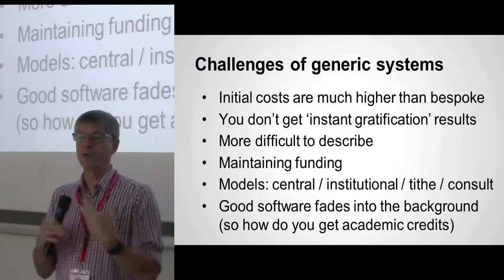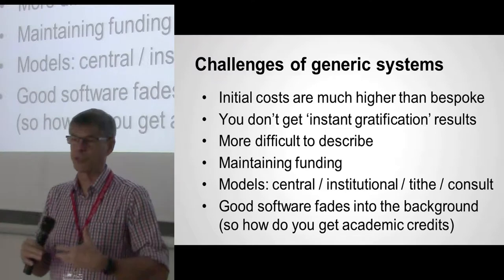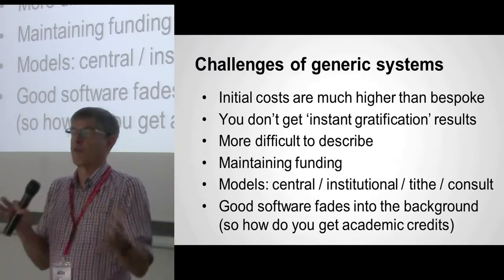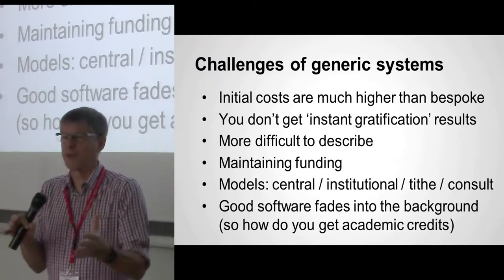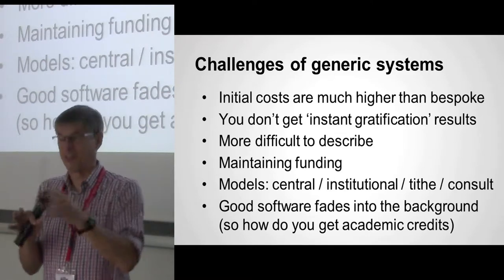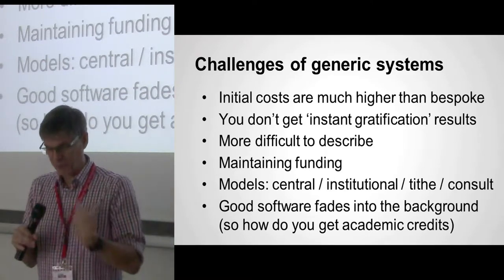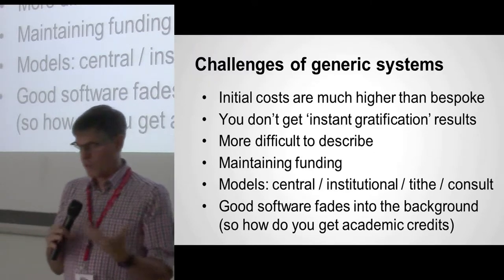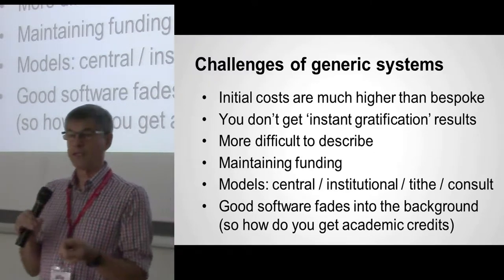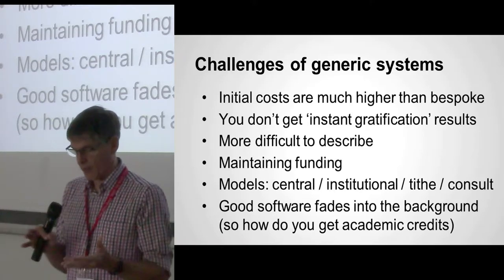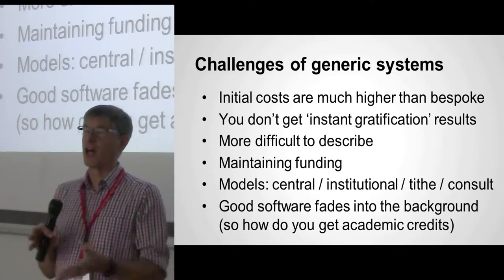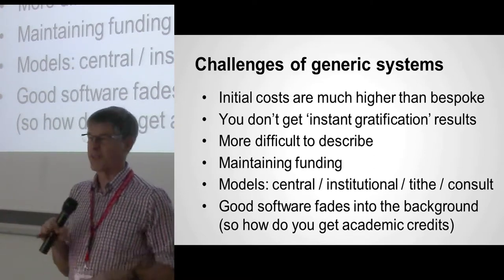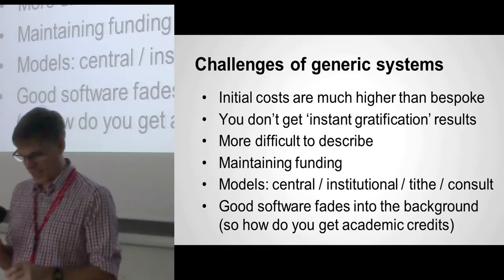Generic systems are more difficult to describe and more difficult to sell to funders. You say, 'We're going to do a generic thing that will solve everybody's problems,' and they ask, 'But which problem are you going to solve?' So you have to look at different models for maintaining funding: central funding where somebody gives you a stack of money; institutional funding where the institution decides it's worth doing; a tithe model; and consulting. Those are the sorts of models used in the open source world in general.